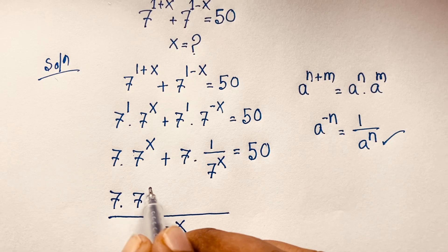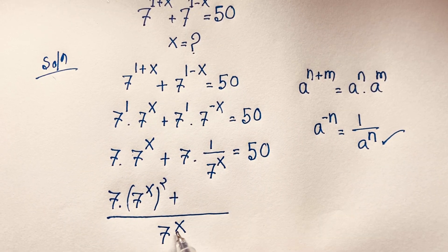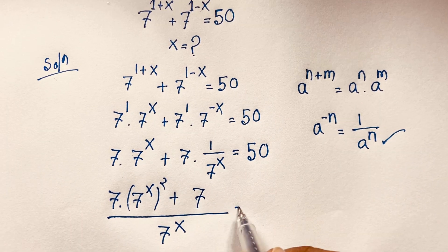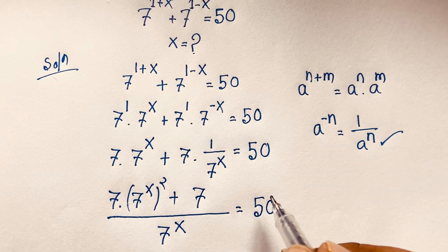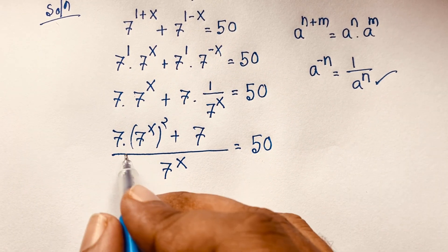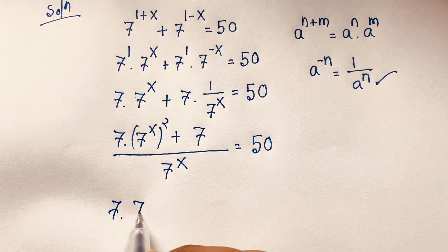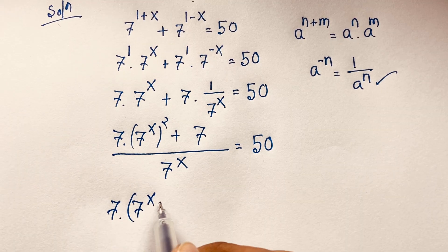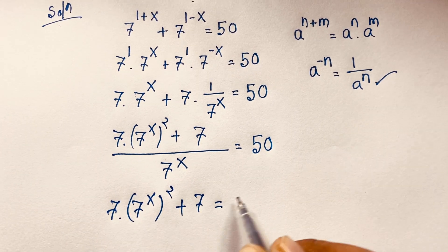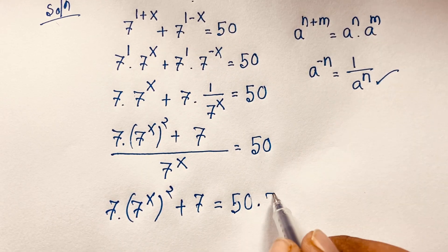Multiplying through by 7^x, we get 7 times (7^x)² plus 7 equals 50 times 7^x. This simplifies to 7 times (7^x)² minus 50 times 7^x plus 7 equals 0.